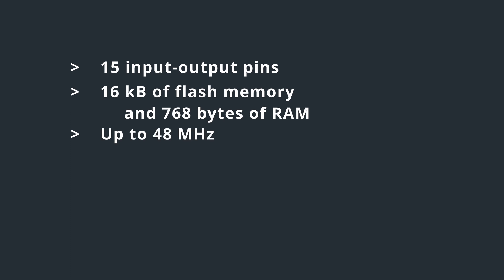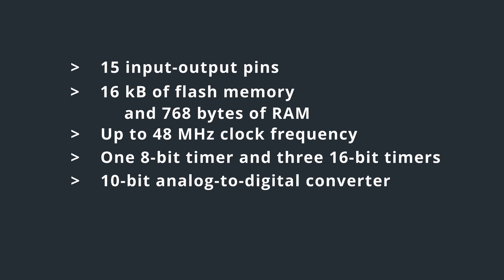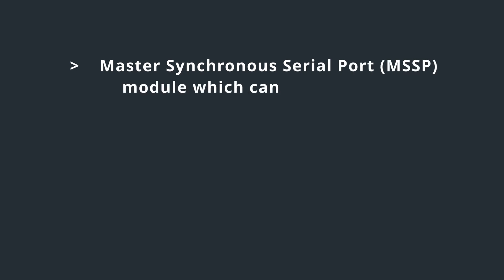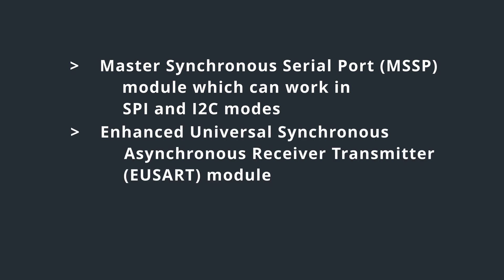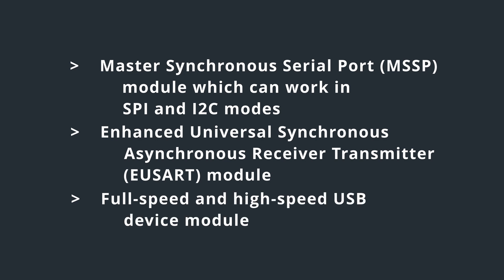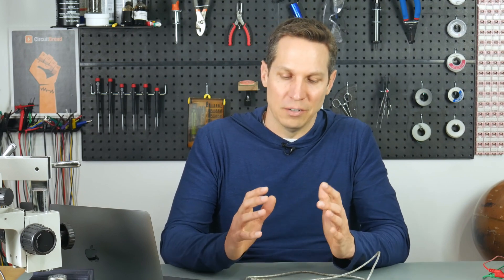It goes up to 48 megahertz clock frequency and you have either one 8-bit timer or three 16-bit timers to choose from. It has a 10-bit ADC, dual rail-to-rail comparator, a master synchronous serial port MSSP module that can work with both SPI and I2C. It also has the UART or EUSART module and is capable of full speed and high speed USB device interfaces, giving you a lot of hardware options instead of having to bit-bang everything in software.